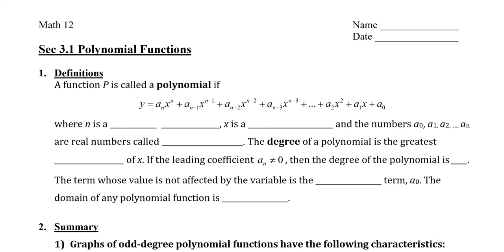In this video, we're going to take a look at polynomial functions. Specifically, we're going to look at the general shape of the graph — how many x-intercepts and y-intercepts it could have, and whether it has a max or a min. So let's start with just looking at what a polynomial is. You'll see that this long equation describes a polynomial. It's a little bit intimidating, but we'll break it down.